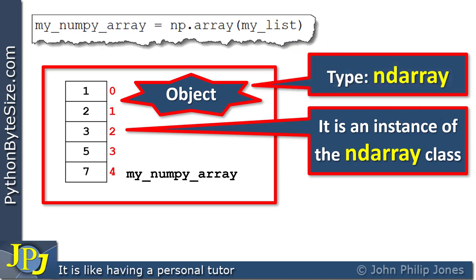And the definition of the ndarray class is within the numpy module. So when this line executes, we have to be clear that we get an object, and the object is of type ndarray, which means it's been based on the ndarray class, which is a class defined in the numpy module.